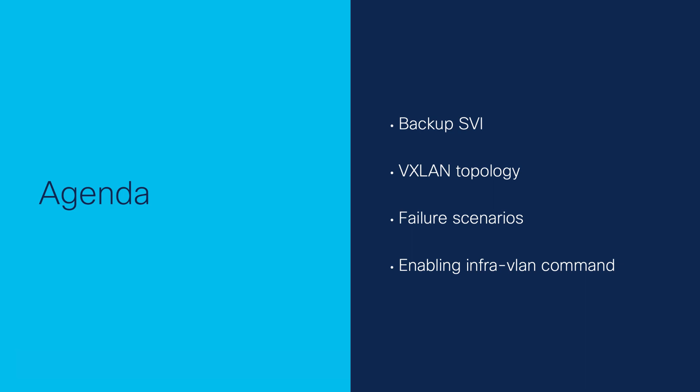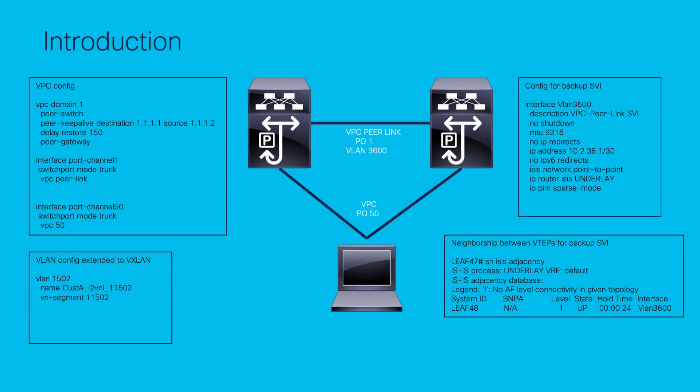We will discuss the purpose of the command 'system NVE InfraVLANs' to ensure the correct forwarding of the traffic flowing through the peer link, encapsulated with a VXLAN header. When the Nexus 9K are configured as VXLAN leaf switches in VPC, you must have a backup Layer 3 routing adjacency between them over the VPC peer link with the use of an interface VLAN. This VLAN must be local to the switches, not stretched across the VXLAN fabric, and belong to the default VRF.